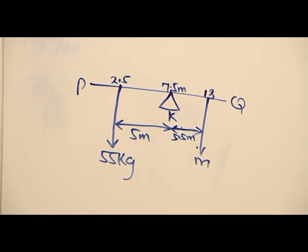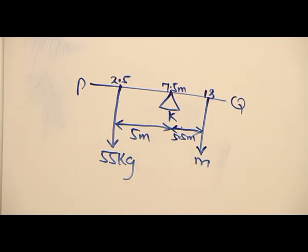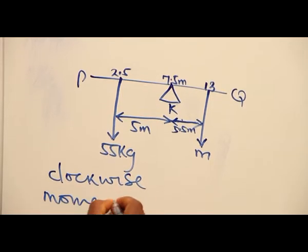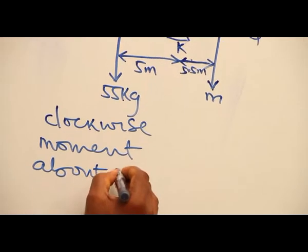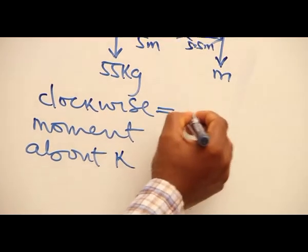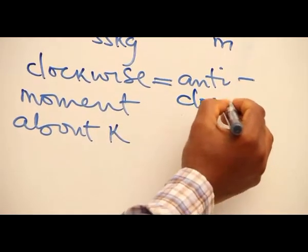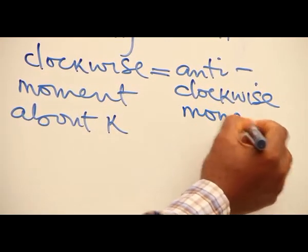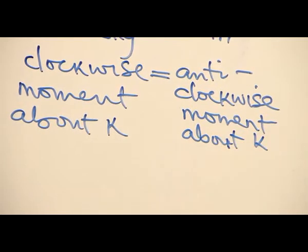We can now get the unknown mass M using our knowledge of moments. Clockwise moments about K must be equal to the anticlockwise moments about K, the same turning point.